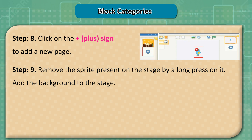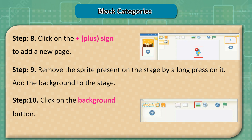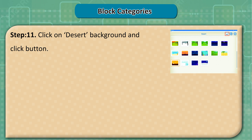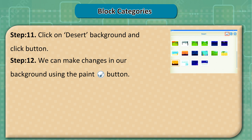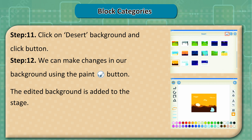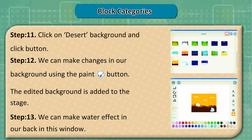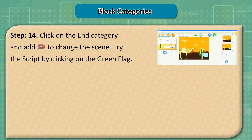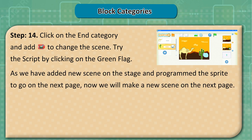Step 9: Remove the sprite present on the stage by a long press on it, then add the background to the stage. Step 10: Click on the background button. Step 11: Click on the desert background and click the button. Step 12: We can make changes to our background using the paint button. The edited background is added to the stage. Step 13: We can make a water effect in our background in this window. Step 14: Click on the end category and add to change the scene. Try the script by clicking on the green flag.